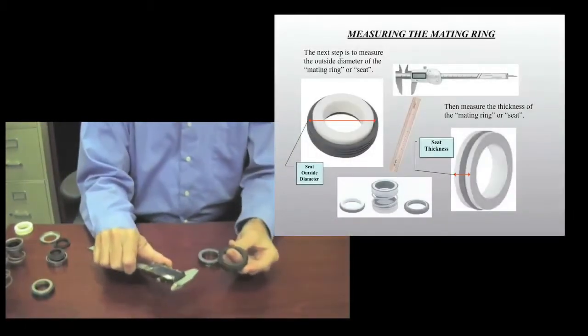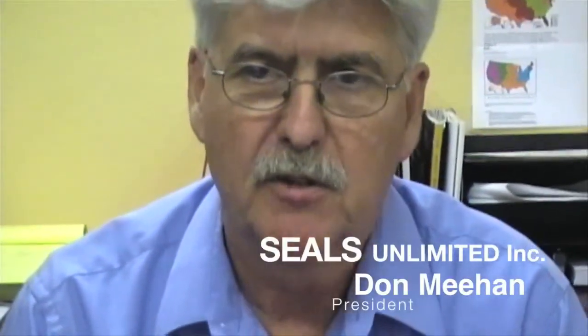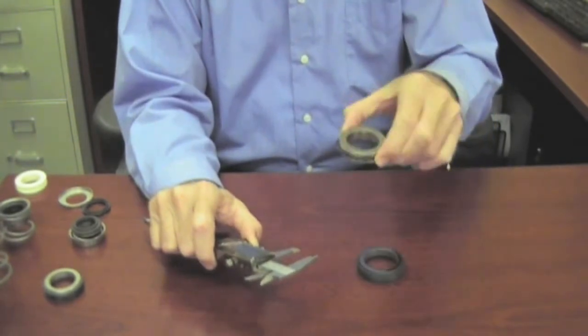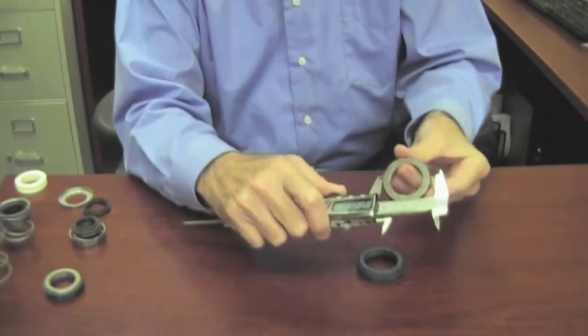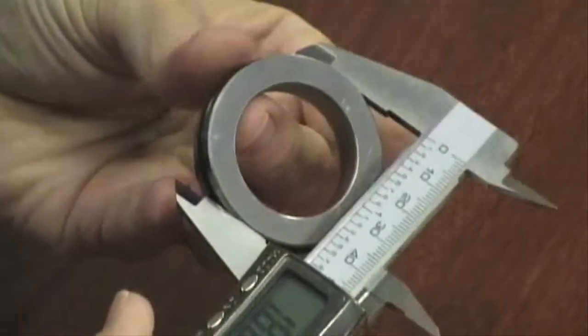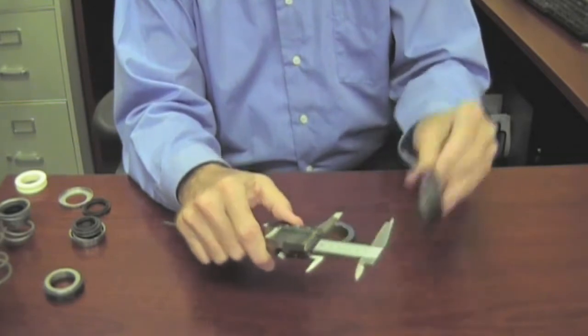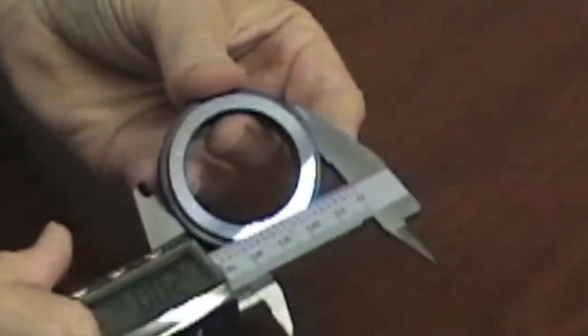The next critical dimension we need for the mechanical seal is the outside diameter of the seat. This is your seat. There is another type of seat. We are looking for this dimension out here, which is the outside diameter of the seat. Here it is on one that has a rubber cup on it instead of an o-ring.